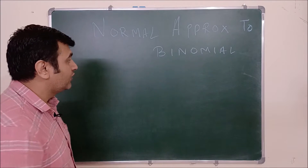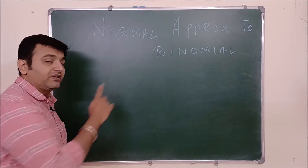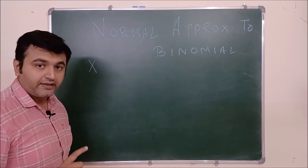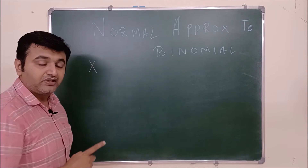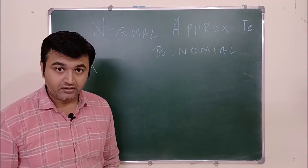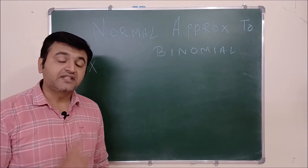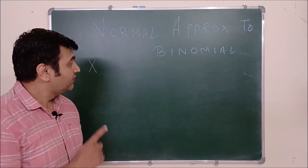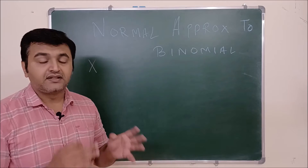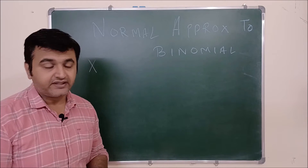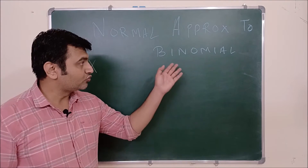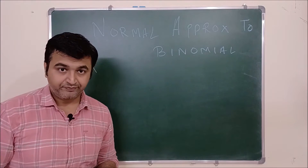What is that connection? In binomial distribution, if you recall, X was a discrete random variable, whereas for normal distribution it was a continuous random variable. But still, there is a nice connection. Whenever you want to solve a binomial problem, then under nice conditions, one can always use the Z distribution to solve a binomial distribution problem.